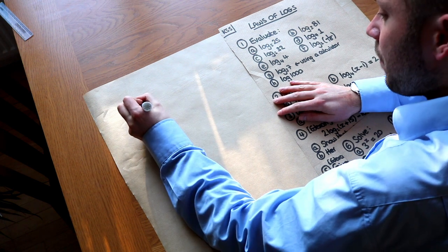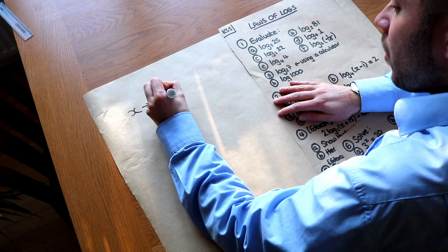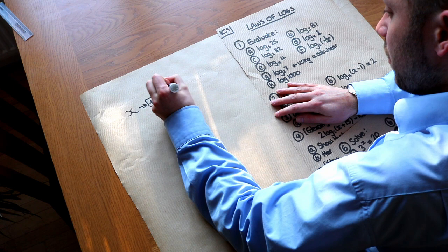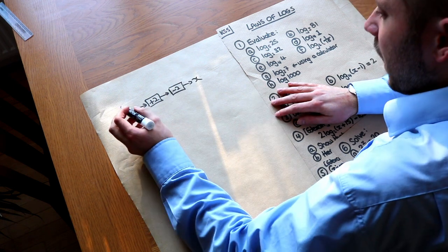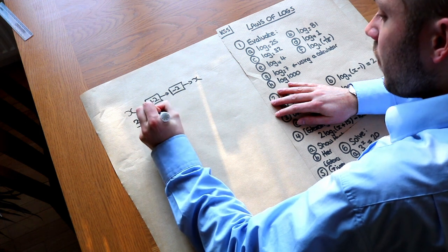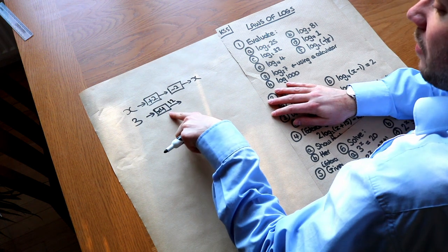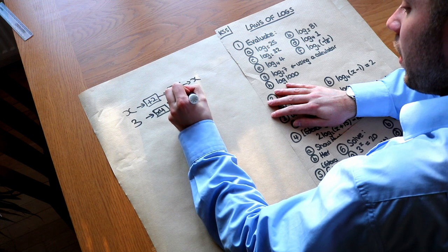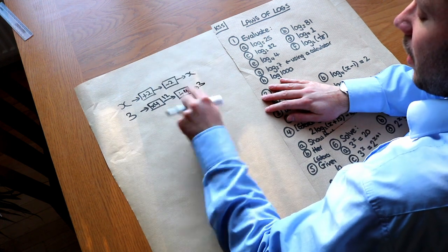If I had an initial input x and I added 2 to it, how would I undo that plus 2? Well you would subtract 2 to get back to x. Now what about if we had an input 3 and we times it by 4 to get 12 — how would we undo that times 4? Well we would divide it by 4. So the inverse of times-ing by 4 is dividing by 4.